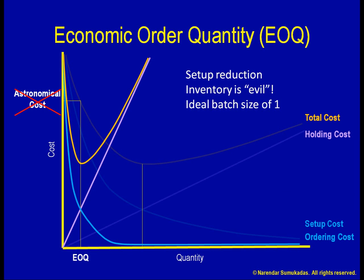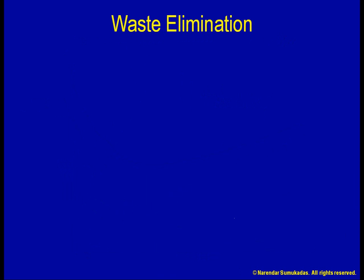Another important intangible cost of inventory is that it covers up process inefficiencies. Such a cover-up runs counter to the lean systems principle of waste elimination. Rather than hide inefficiencies using inventory, the lean systems methodology utilizes inventory reduction as a tool to identify and highlight problems.